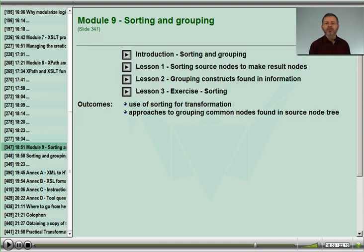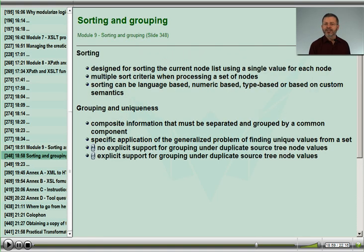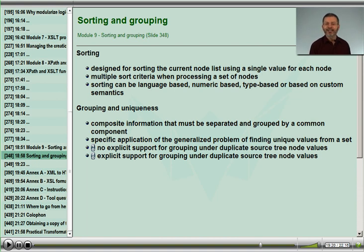The last instructional node addresses sorting and grouping. We'll look separately at the task of arranging our resulting information in sorted order and the task of arranging our information in groups. Specifically, we'll examine the algorithms of doing grouping in different ways, with different benefits, in XSLT 1 and how these have all been generalized and enhanced in XSLT 2.